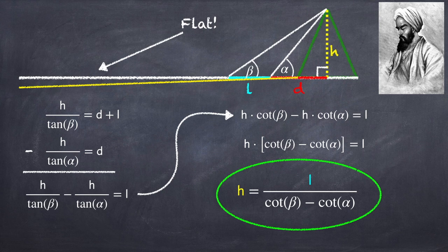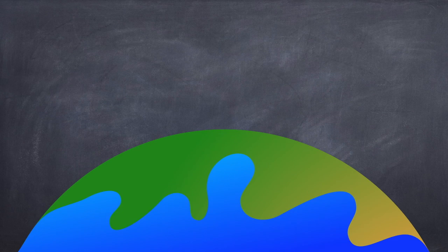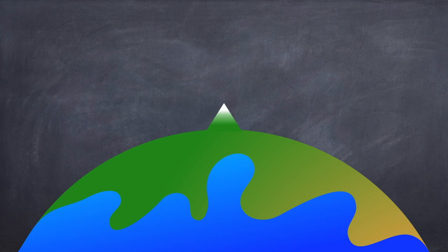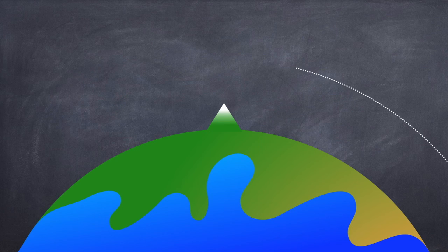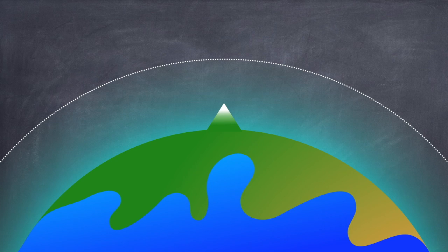You see, if this is the Earth, and you've got a mountain on top of it, the Earth is surrounded by an atmosphere, and that atmosphere is thicker at the surface than it is at higher altitudes.